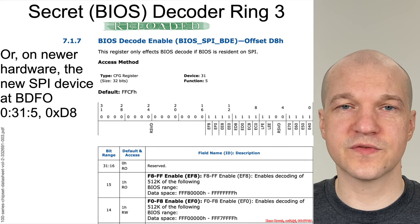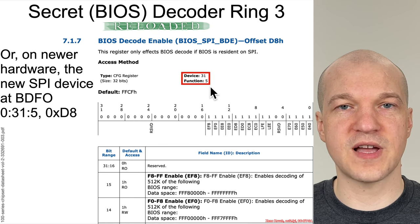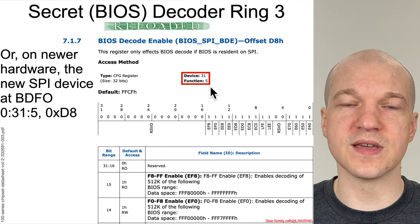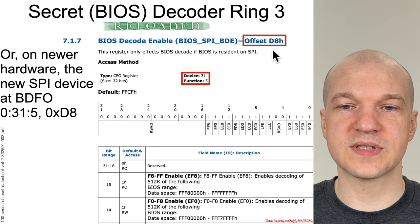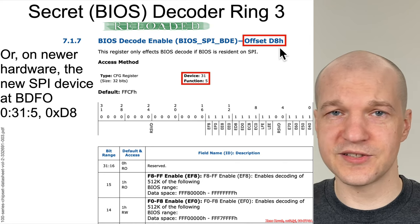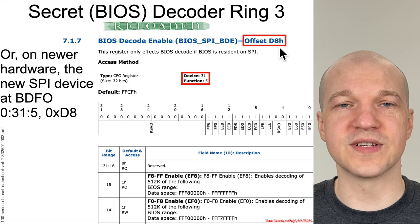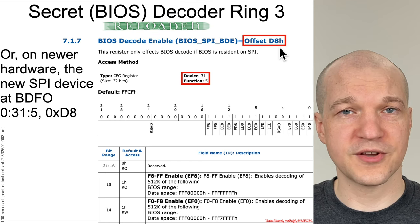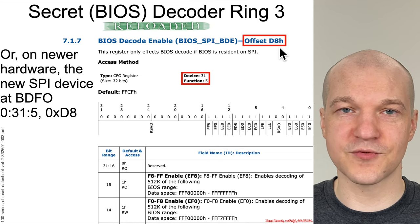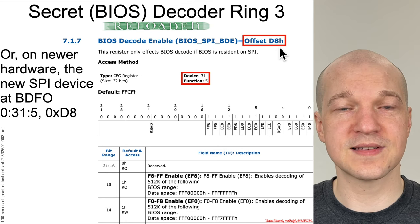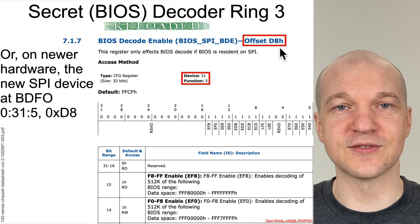For the 100-series chipsets, the data sheets show it moved to bus 0, device 31, function 5, which corresponds to the SPI device, and it was still at offset D8. It's as if Intel just picked up this information from the LPC device and plopped it into the SPI device. So there you go — just one of many registers in the PCI configuration address space, all of them waiting for you to read, explore, and see what other options exist out there.